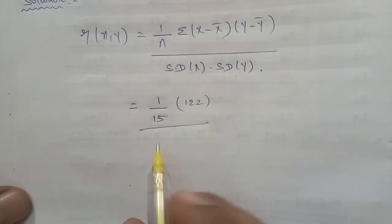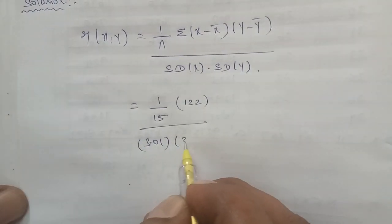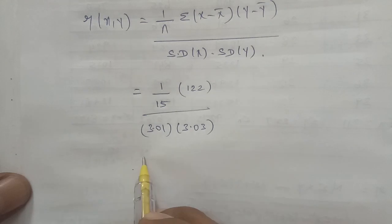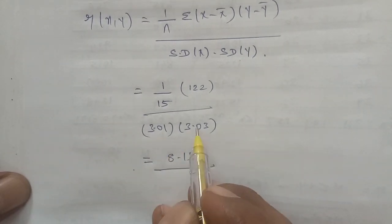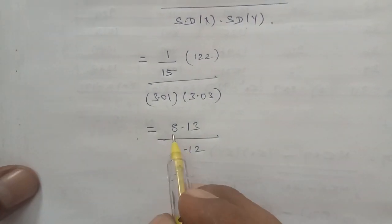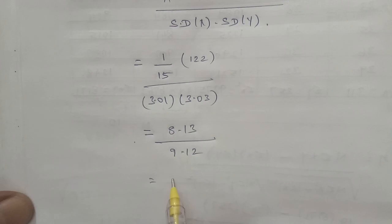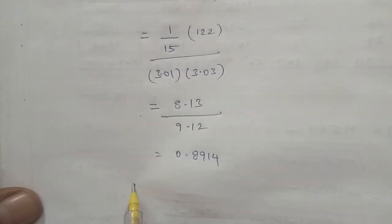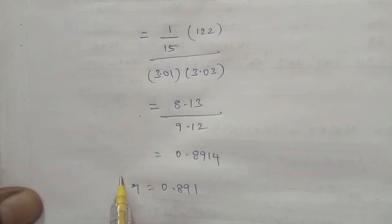So entering the values: 122 divided by 15, divided by 3.01 times 3.03, equals 8.13 divided by 9.12, equals 0.8914. So r is equal to 0.8914, that is the final answer.